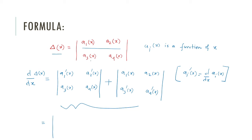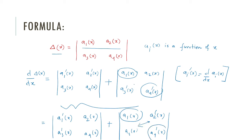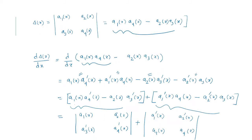We can do the same treatment column-wise as well, and the formula will remain unchanged. For the column-wise derivative: take the derivative of each entry of the first column keeping the second column constant — giving a1'(x), a3'(x) with a2(x), a4(x) constant — plus keep the first column constant and take the derivative of the second column. You can see that the diagonal entries remain unchanged and only the off-diagonal entries change position, which is why the formula remains the same.